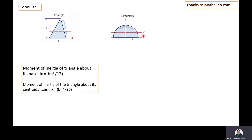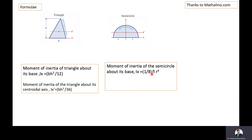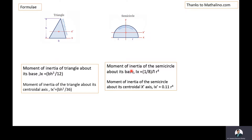The moment of inertia of a semicircle about its base is IX = (1/8)πr⁴. In the present problem, we will use this formula — that is, the moment of inertia of the semicircle about its base is equal to (1/8)πr⁴.